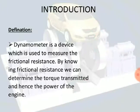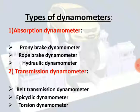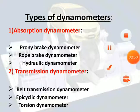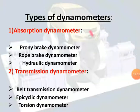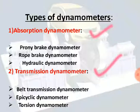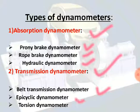Dynamometers are classified into two types: absorption dynamometers and transmission dynamometers. Absorption dynamometers are further classified into three types: prony brake, rope brake, and hydraulic dynamometer. Transmission dynamometers are also classified into three types: belt transmission dynamometer, epicyclic dynamometer, and torsion dynamometer.